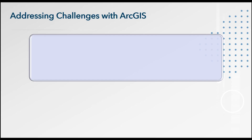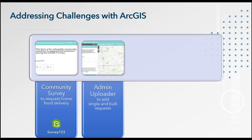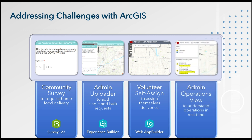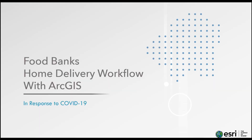We were able to address the challenges of the food bank using ArcGIS. We created a community survey to gather qualifying requests from the community. We have an administrative uploader to add single or multiple requests at one time. Volunteers were able to self-assign deliveries and get food to those who need it most. Administrators in the office had a full operational view to understand the delivery program in real time. Addressing those challenges involved just one system, one data layer, and four synchronized applications. And that is the food bank's home delivery workflow created with ArcGIS in response to COVID-19. Thank you.